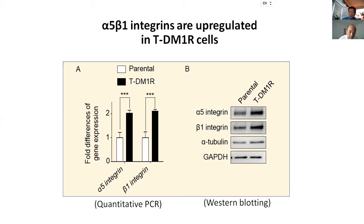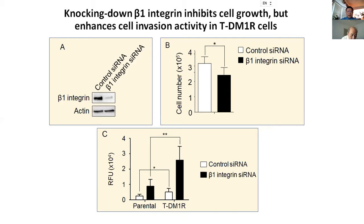Next, when we locked down beta-1 integrin, two differences occurred. First, as shown in Figure B, growth is inhibited — we can see significance. However, when we locked down beta-1 integrin, invasion activity is increased. So it looks like growth and invasion are regulated by different mechanisms, and both activities are associated with integrin molecules.